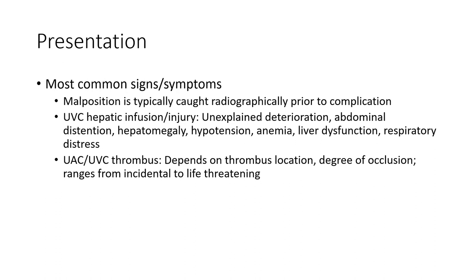Most common signs and symptoms: malposition is typically identified radiographically prior to complications. UVC malposition may cause hepatic infusion injury, unexplained deterioration, abdominal distension, abdominal rigidity, hypotension, anemia, liver dysfunction, and respiratory distress. UVC and UAC thrombosis, depending on location and degree of occlusion, can range from incidental to life-threatening.